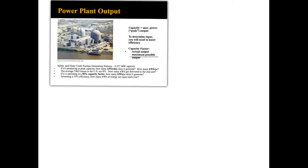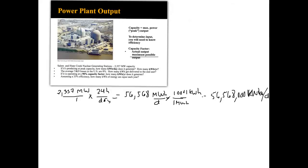So we start with, it's a 2,357 megawatt. That's your capacity there. So we just need to multiply times 24 hours per day. And that's going to give us 56,568 megawatt hours per day. So that's our first answer, 56,568,000 kilowatt hours per day.